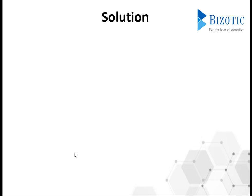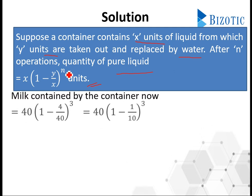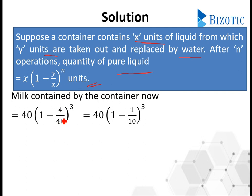Anyways, let's concentrate on the solution. In order to explain the solution, I would like to recall the second method we learnt in the concept. The concept says: suppose a container contains x units of liquid, from which y units are taken out and replaced by water or any other liquid. After n operations, the quantity of pure liquid is given by the following formula, where x is the container quantity, y is the replaced quantity, and n is the total number of times the process has been repeated.